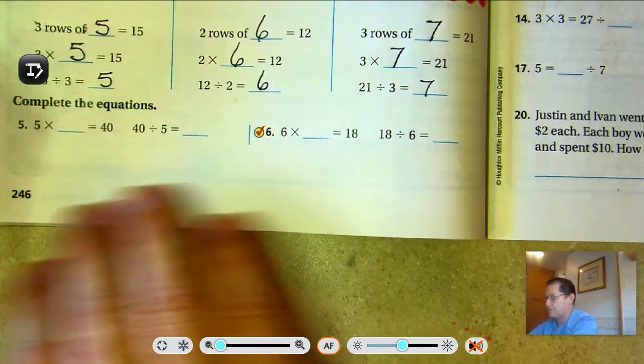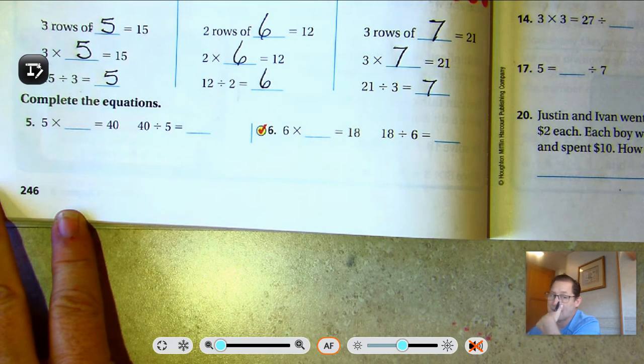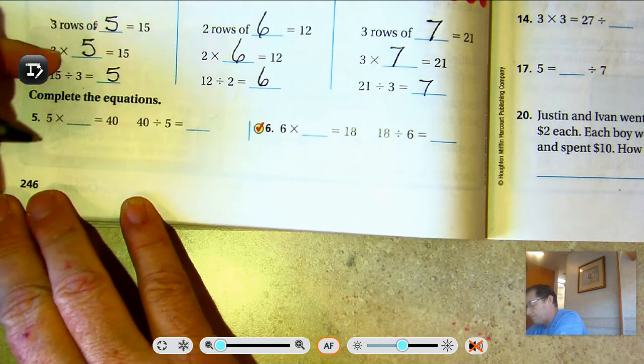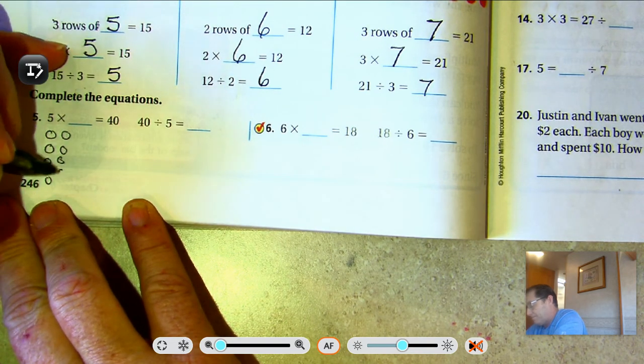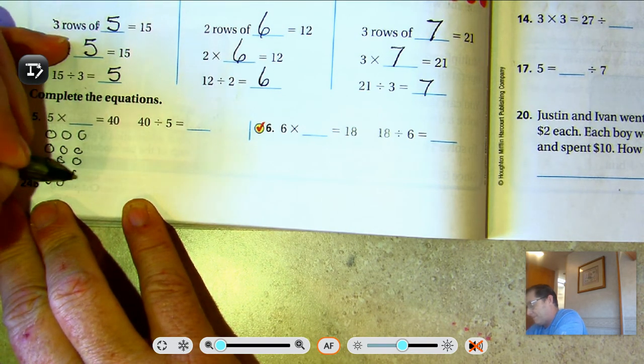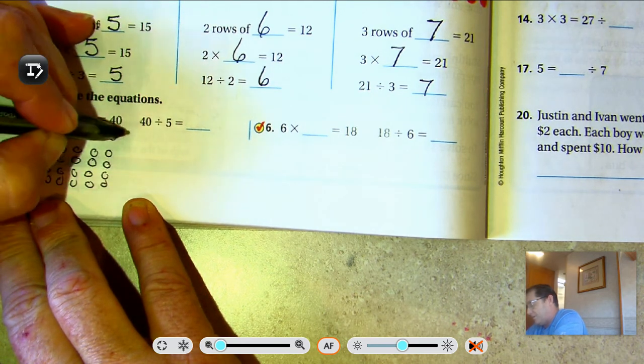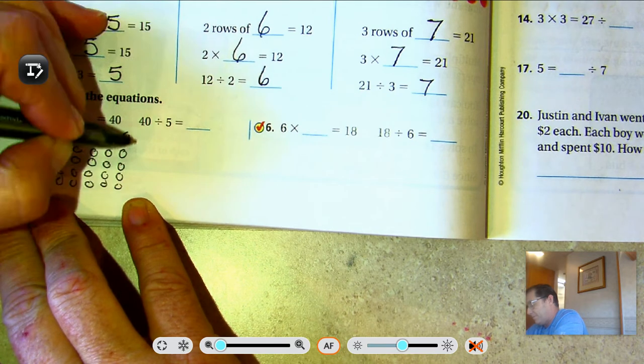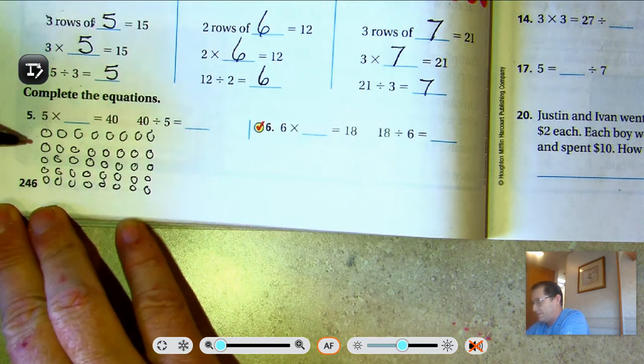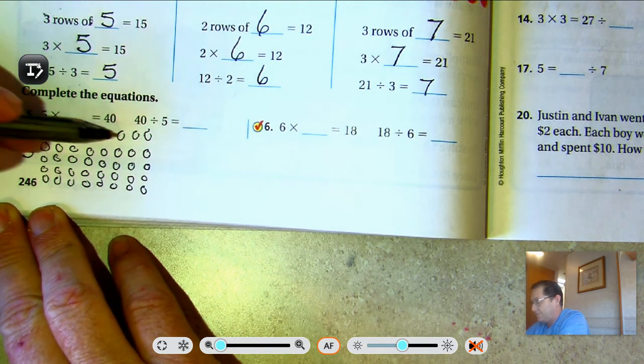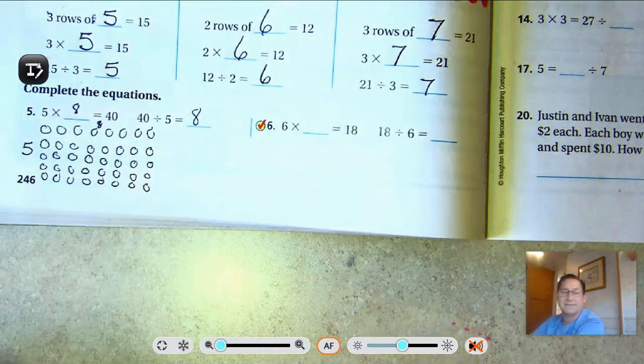Complete the equations. Five times what is 40? 40 divided by five is what? Counting by fives: 5, 10, 15, 20, 25, 30, 35, 40. So we have five rows of eight. Five times eight is 40. Forty divided by five is eight.